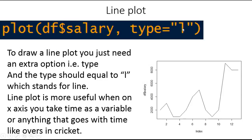So this will plot a line plot like this. This is again the same thing but instead of points you get a line for those points. This shows a trend like how the salary is going up and down among the persons. But this is not a good idea to have a plot for salary only — there must be something like time on the x-axis.